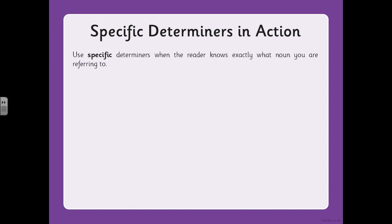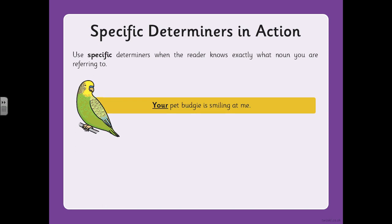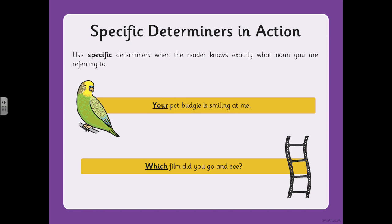Here are some examples of specific determiners in action. 'Your pet budgie is smiling at me' — we've got the determiner 'your'. 'Which film did you go and see?' — and we've got the determiner 'which'.